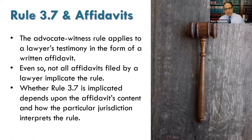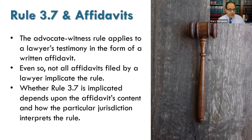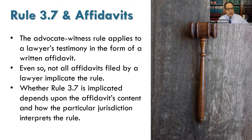Three points to remember about Rule 3.7 and affidavits. First, the advocate-witness rule applies to a lawyer's testimony in the form of a written affidavit — you can't get around this rule by submitting your testimony as an affidavit instead of taking the stand, as that's the equivalent of testifying. If you're submitting a material affidavit on a contested issue, you still can't be the lawyer in the case. Second, not all affidavits filed by a lawyer implicate this rule. Third, whether 3.7 is implicated depends on the affidavit's content.